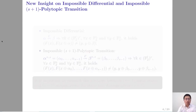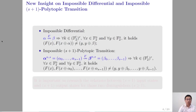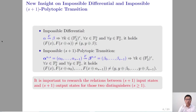To overcome the limitations of those automatic search tools, we reconsider the definitions of those two distinguishers. Actually, assume alpha-beta is an impossible differential of a function f. Then, for all keys k, x, and y, f(x) XOR f(y) does not equal alpha implies the output difference does not equal beta. This similarly applies for impossible s-plus-1 polytopic transitions. Thus, for both distinguishers, it is important to research the relations between some input states and output states.